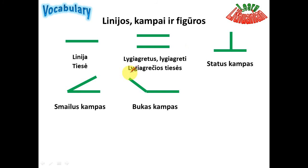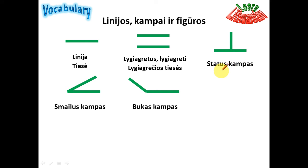From this word, another noun 'lygiagretainis' is formed, just as in the previous slide — the shape 'lygiagretainis' is made from these adjectives. Now, a perpendicular angle: status kampas.